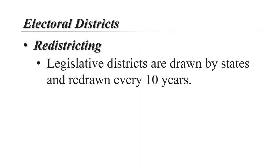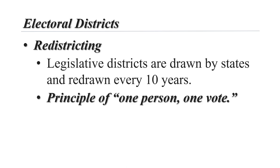The geographic shape of district boundaries may change due to several factors, including population shifts as determined by the United States Census. In 1962, the Supreme Court case Baker v. Carr ruled that federal courts could intervene in the drawing of legislative districts. Later, the court ruled that state legislative and congressional districts must be roughly equal in population, reflecting the principle of one person, one vote.